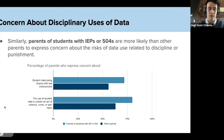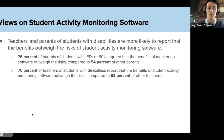We found that teachers of students with disabilities are more likely than other teachers to express concern about the risks of data use related to discipline or punishment. The chart shows this contrast across a couple of different discipline-related questions, including sharing student data with law enforcement and using student data for certain predictive purposes related to discipline. Part of why these use cases are potentially concerning is due to the risk of embedding systemic biases that adversely impact students with disabilities into data used for disciplinary decision-making.